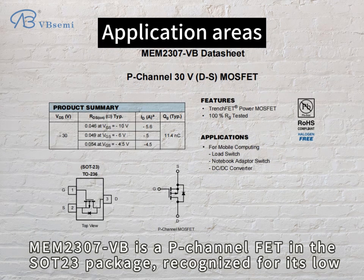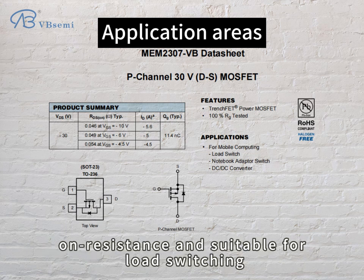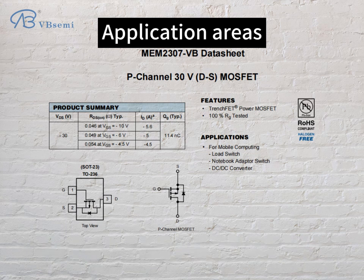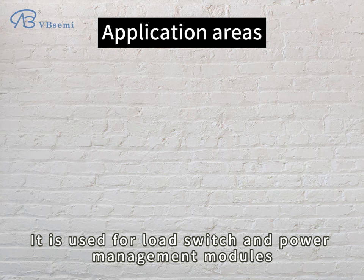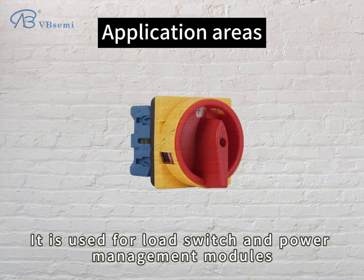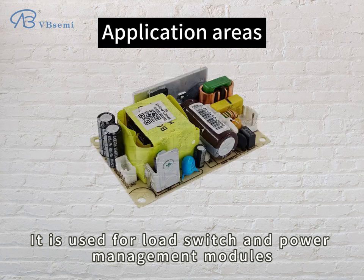MEM-2307VB is a P-channel FET in the SOT23 package, recognized for its low on-resistance and suitability for load switching. It is used for load switch and power management modules.